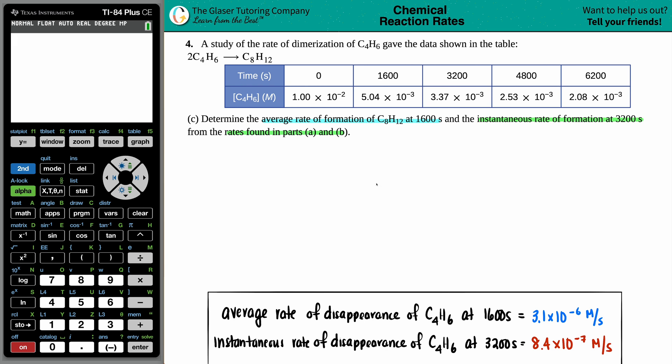In essence what we're doing is we're going from a rate of C4H6, because that's what we found out at the 1600 seconds, and now we're just converting into a new rate. We want to find the rate of formation of the C8H12. Now don't get too caught up on rate of formation, rate of disappearance - just know that a rate is a rate.